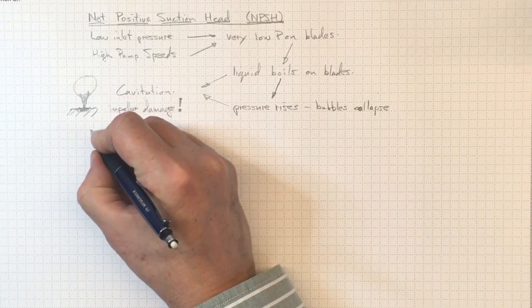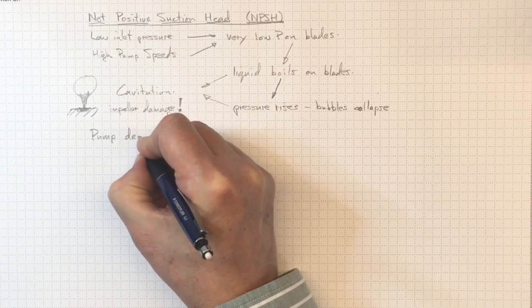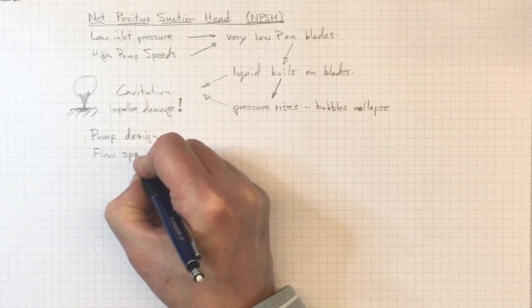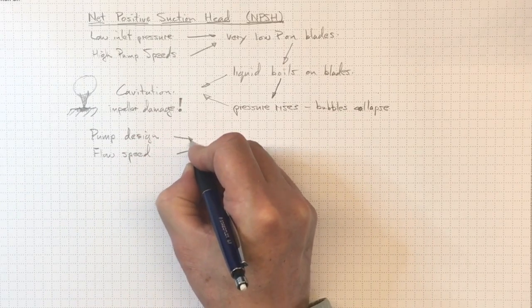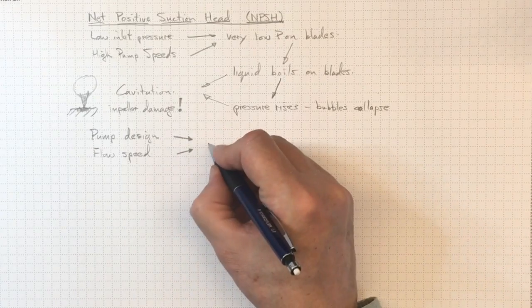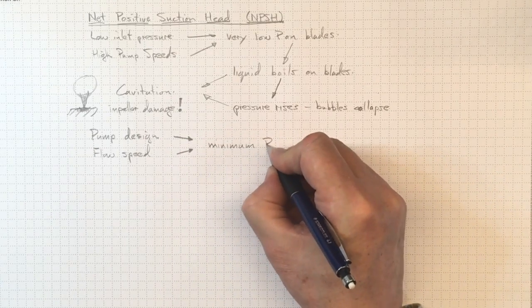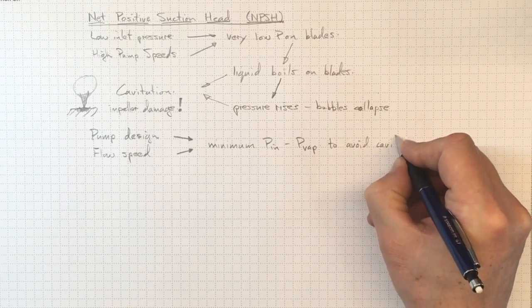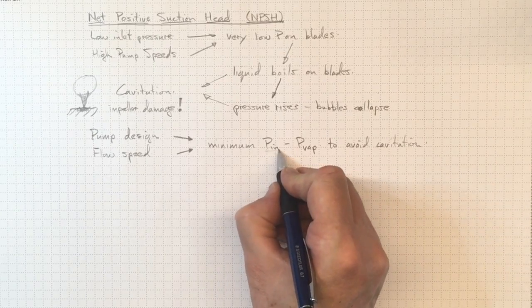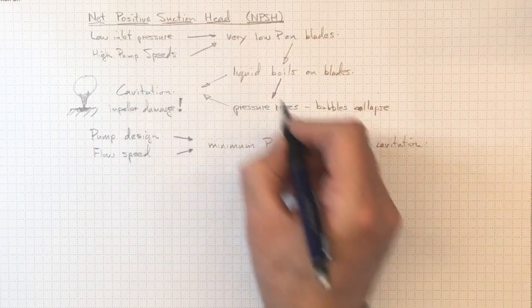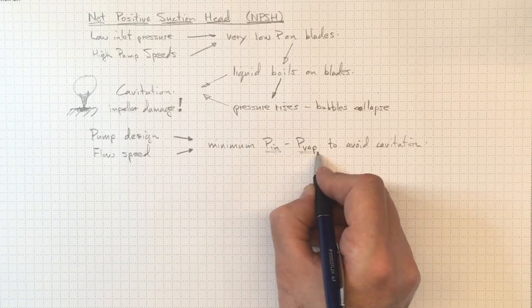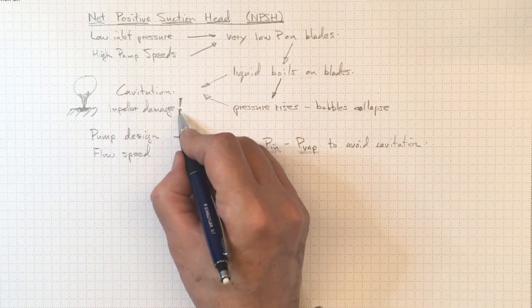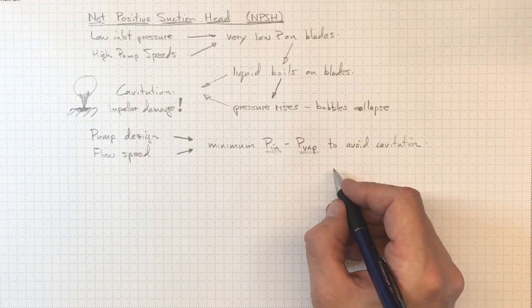So as a consequence of pump design, in order to get the performance that we're looking for and the flow speed of the liquid going through the pump, the two of those in combination will result in a minimum inlet pressure that we can tolerate compared to the vapor pressure in order to avoid cavitation. So if we can just keep the inlet pressure or the suction pressure enough above the vapor pressure, then we won't have any boiling and we won't have any bubbles collapsing. We won't have any cavitation and we won't have any cavitation damage.